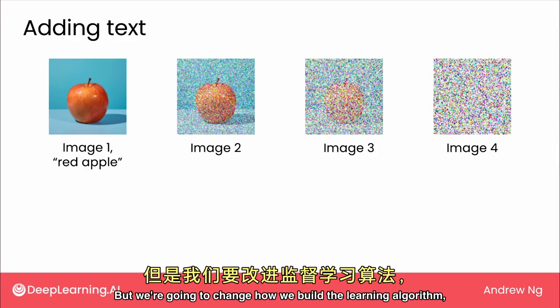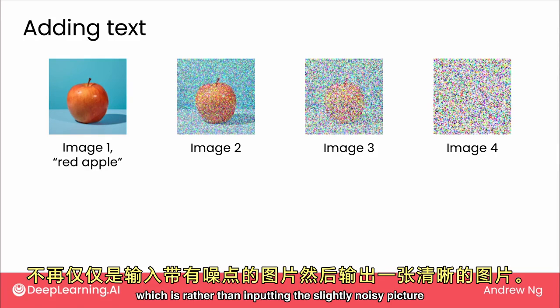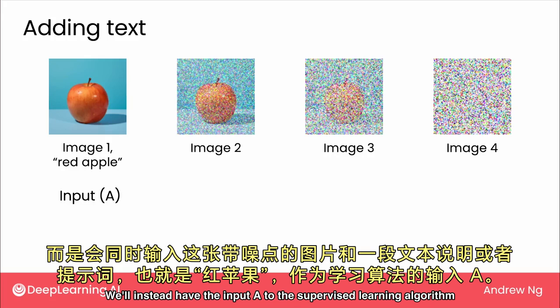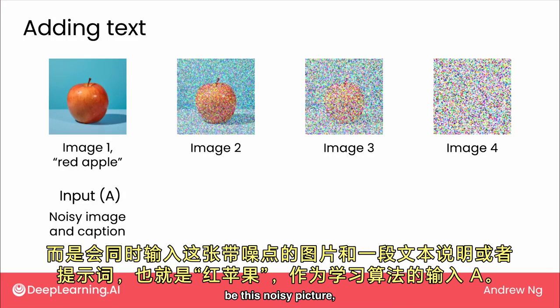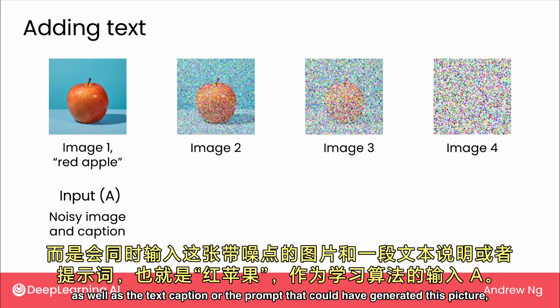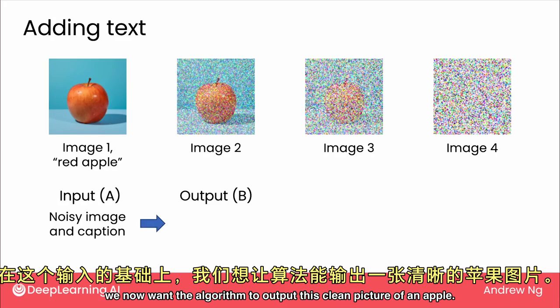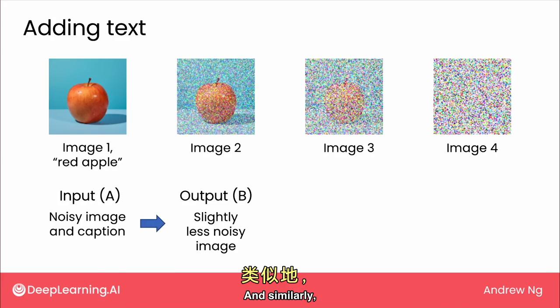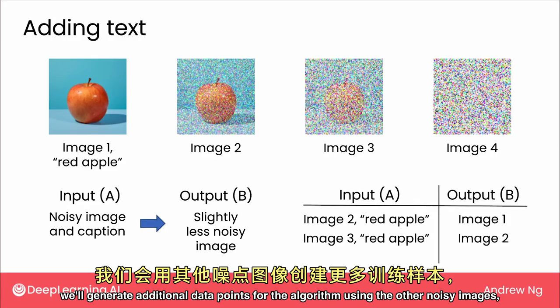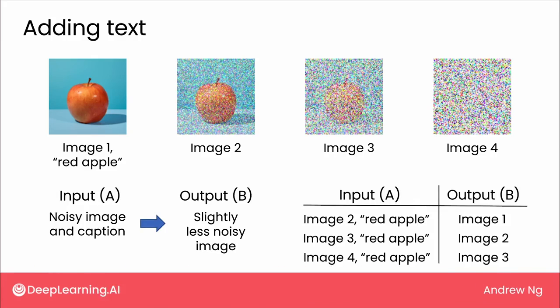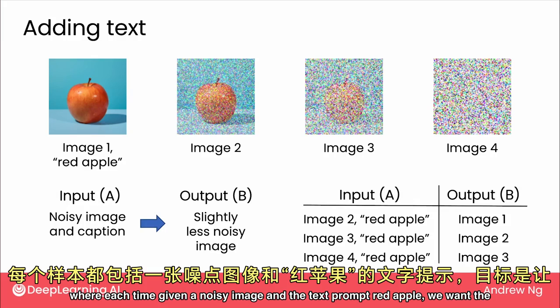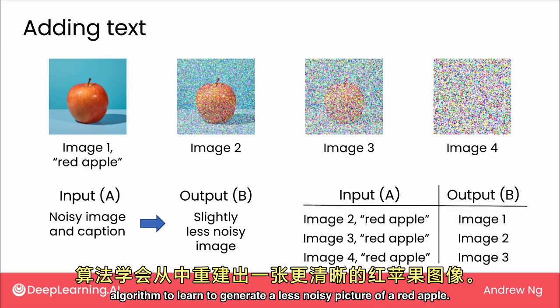But we change how we build the learning algorithm: rather than inputting just the slightly noisy picture, we instead have the input to the supervised learning algorithm be this noisy picture as well as the text caption or prompt that could have generated this picture — namely, red apple. Given this input, we want the algorithm to output the clean picture of an apple. Similarly, we generate additional data points using the other noisy images, where each time, given a noisy image and the text prompt red apple, we want the algorithm to learn to generate a less noisy picture of a red apple.